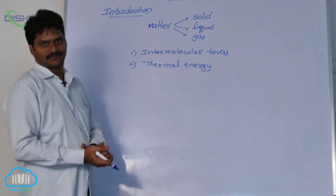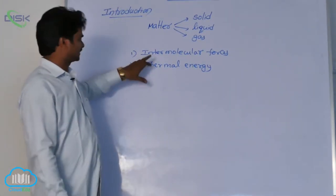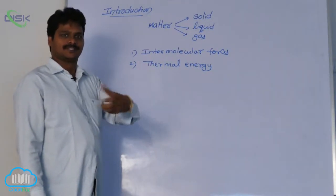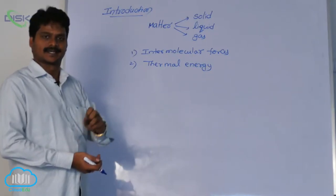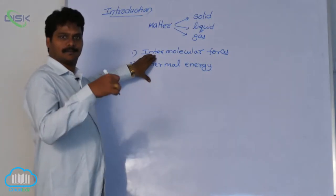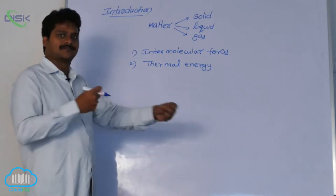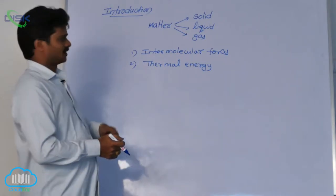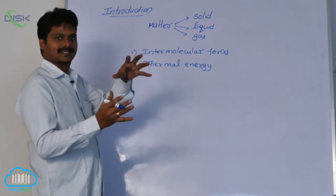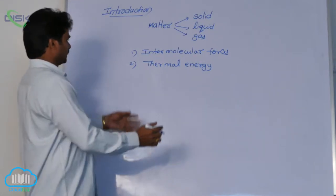Let us see in brief how these two forces influence the physical state of matter. Intermolecular forces and thermal energy are the two opposing forces which give the physical state of matter at a certain temperature and pressure. Intermolecular forces tend to make the atoms come together, whereas thermal energy makes the atoms move apart from each other.